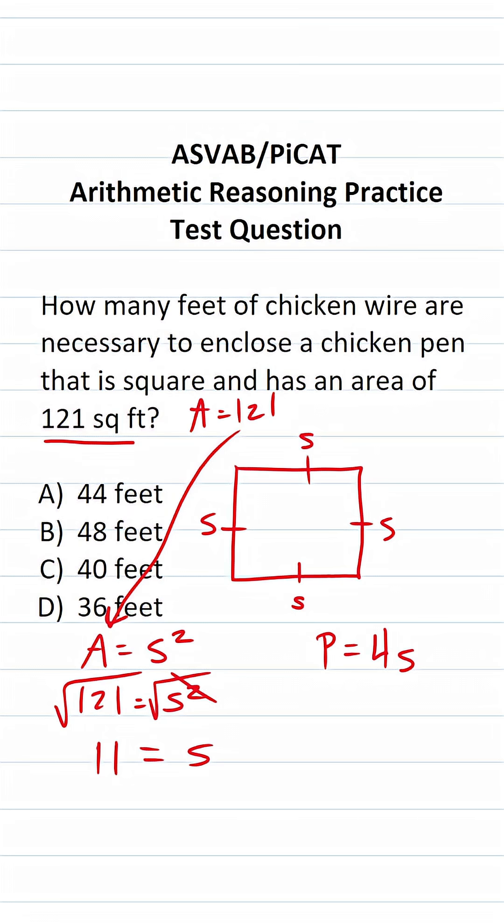You have to know some of your common square roots for this test. Square root of 81, for example, is 9. Square root of 100 is 10. Square root of 121 is 11. Square root of 144 is 12. Square root of 169 is 13, and so on and so forth.